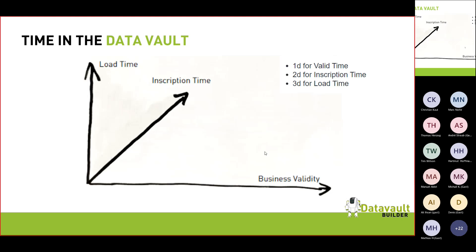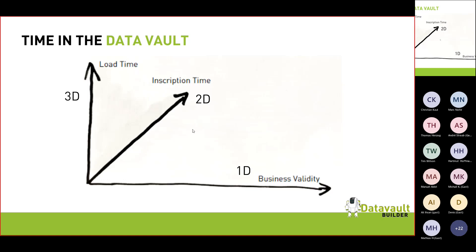I've been in many companies and all of them use different names for these three time axes. Christian wrote a really nice article trying to categorize the different namings from different authors. One client told me they had so many naming differences that they just agreed: let's call them the first, second, and third dimension of time. First, business validity — the real-world event. Second, inscription into the source system. Third, when we loaded it into our reporting system. Using this simple naming, I got very far in making people understand what we were talking about.